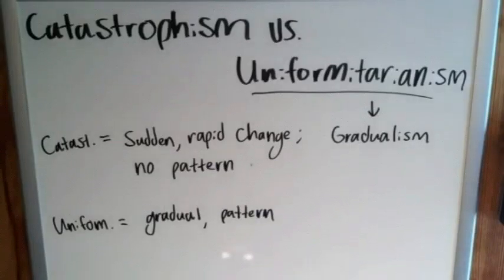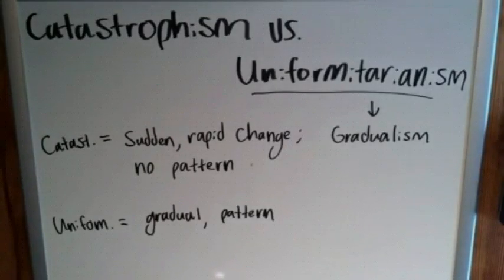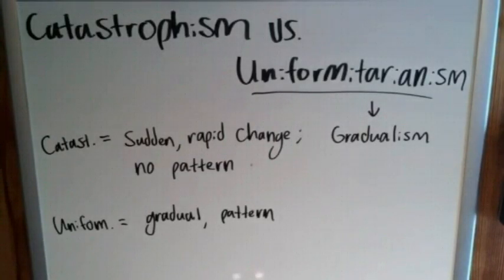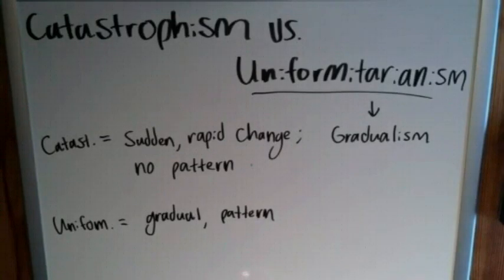One of the key differences between these theories is this: if catastrophism states there have been sudden rapid changes following no particular pattern, then the geologic history of the Earth would be much shorter than what uniformitarianism suggests. Uniformitarianism says these processes have been repeating over and over again over the course of billions of years until we get to where we are today.